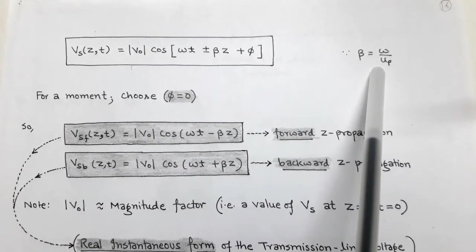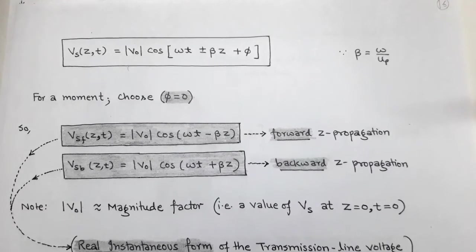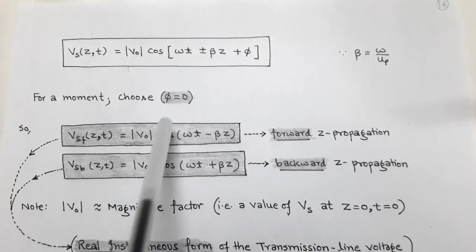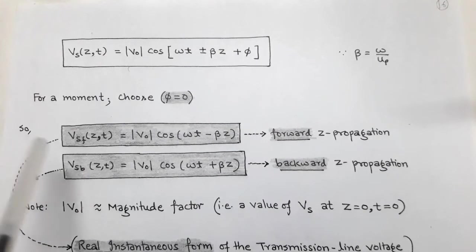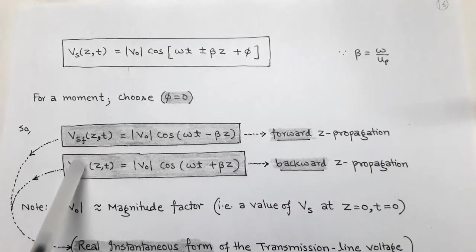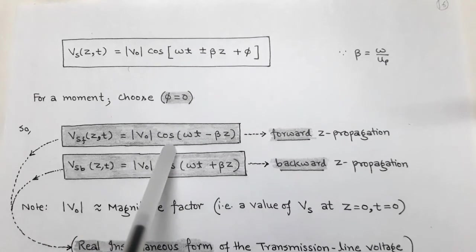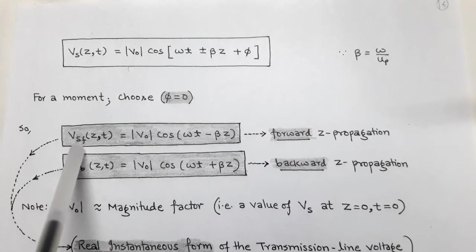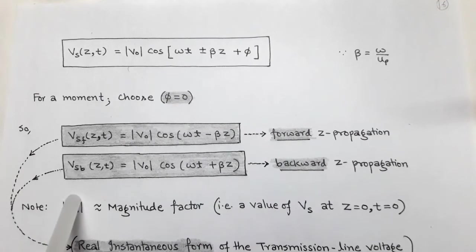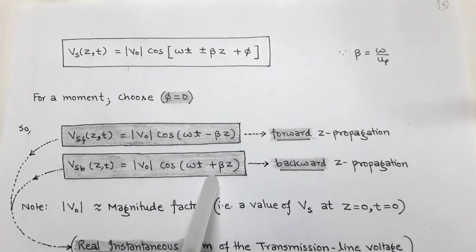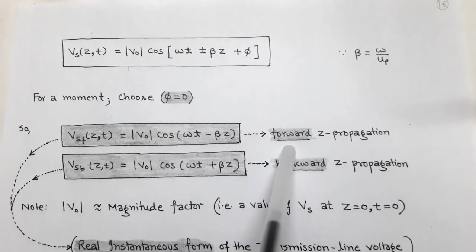Here β is the phase constant with value ω/U_P. For a specific case we choose the phase difference φ = 0. With φ = 0, the forward Z propagation voltage is V_SF(Z, T) = |V₀| cos(ωt − βz), since a minus sign is taken for forward propagation. Similarly, the backward Z propagation voltage is V_SB(Z, T) = |V₀| cos(ωt + βz), with a positive sign for backward propagation.